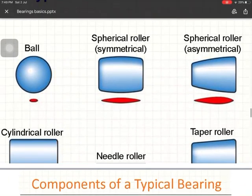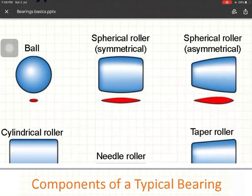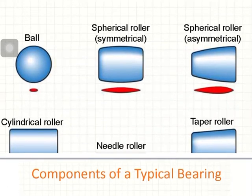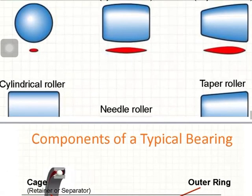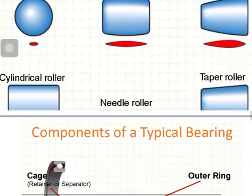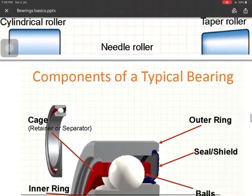These are the rolling elements generally used in anti-friction bearings: spherical rollers, symmetrical rollers, asymmetrical spherical rollers, cylindrical roller shapes, and taper roller shapes.